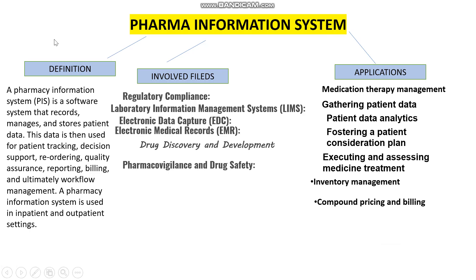Starting with the next topic of pharmacy information system with respect to computer application in pharmacy. A pharmacy information system (PIS) is a software system that records, manages, and stores patient data, and is often used for patient tracking, decision support, reordering, quality assurance, reporting, billing, and ultimately workflow management.